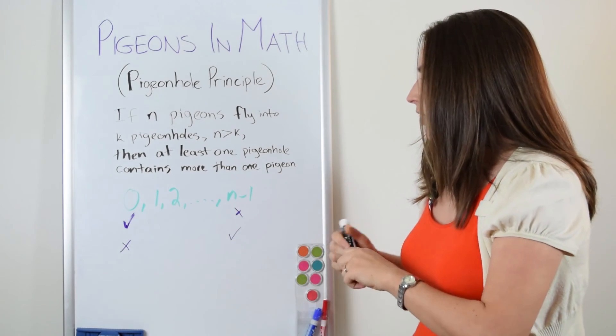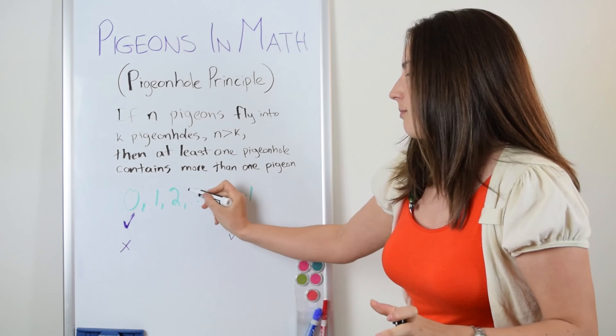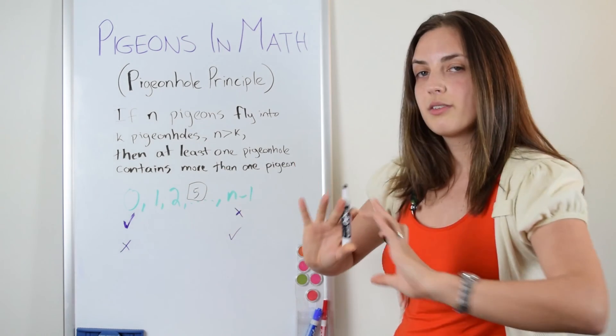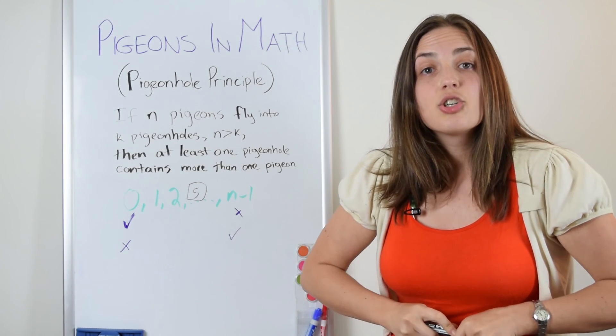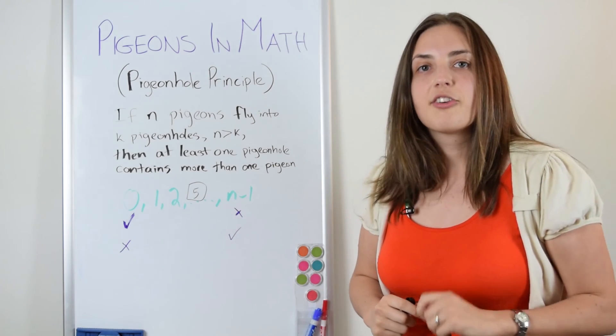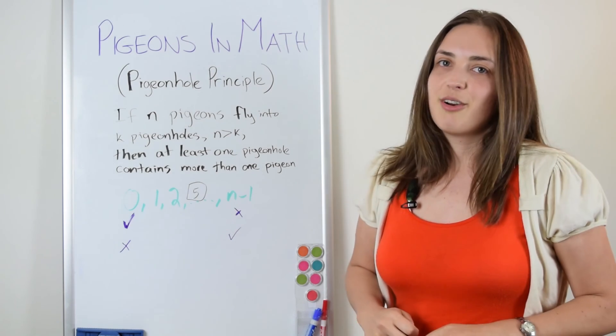So we can conclude that one of these degrees, some degree inside of here, maybe it's five, maybe it's something else, there will be at least two people who share the same degree. Now we don't know which two people and we don't know what the degree is, but we do know that the statement holds.